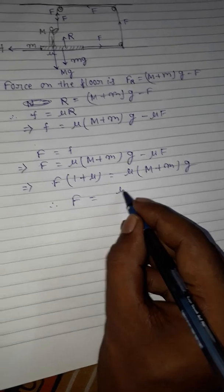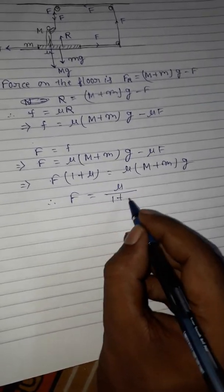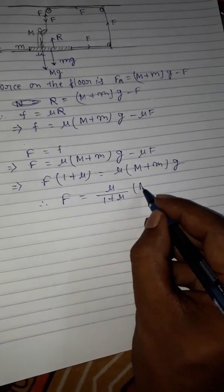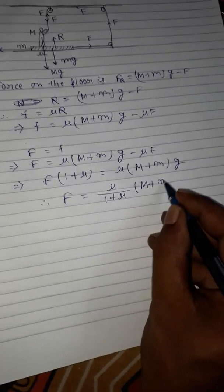Therefore F equals μ/(1 + μ) times (M + m)g.